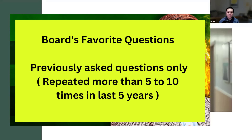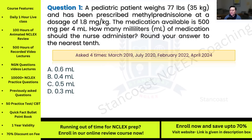Let's get started with the first question. A pediatric patient weighs 77 pounds or 35 kilograms and has been prescribed methylprednisolone at a dosage of 1.8 milligrams per kilogram. The medication available is 500 milligrams per 4 mL. How many milliliters of medication should the nurse administer? Round your answer to the nearest tenth. This question has been asked four times. Options: A) 0.6 mL, B) 0.4 mL, C) 0.5 mL, D) 0.3 mL.